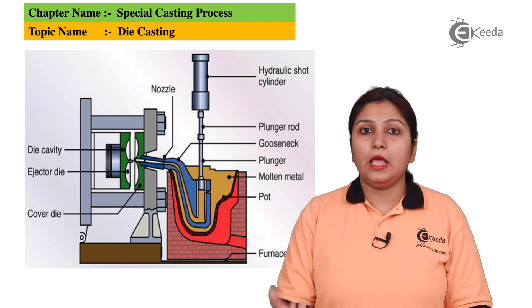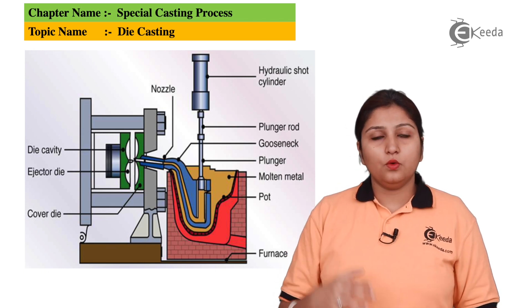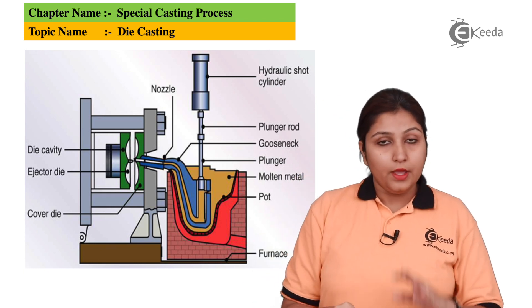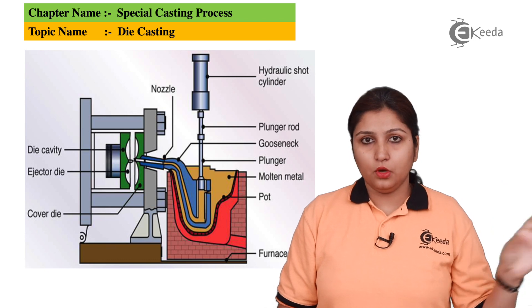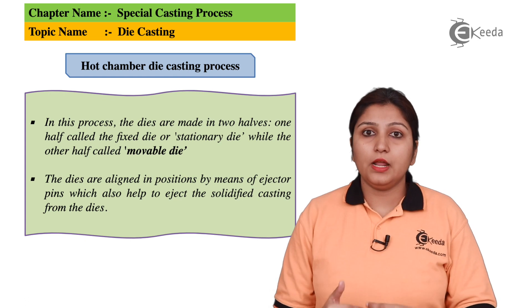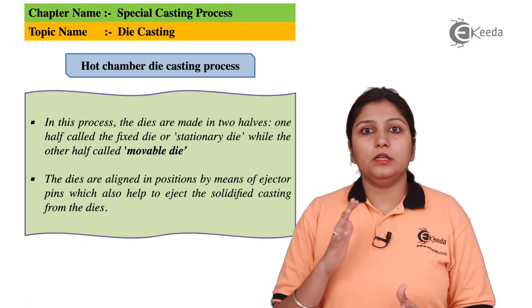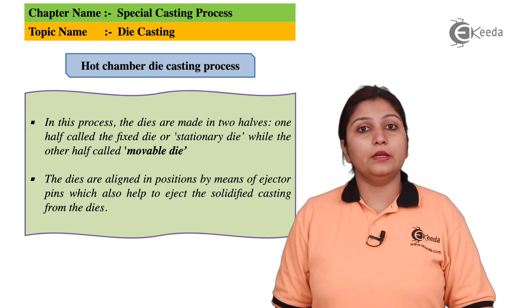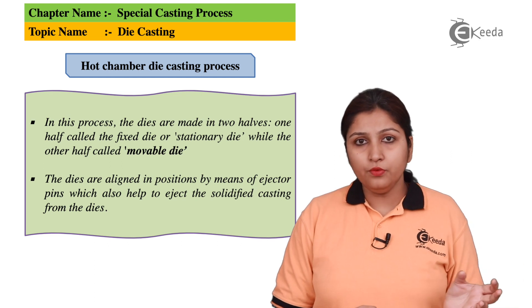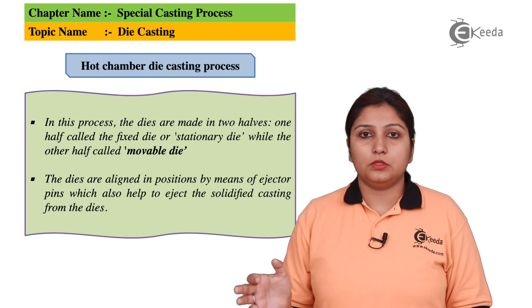As the name suggests, hot die casting requires the material to be hot — the molten material should be at a high temperature. A hydraulic pot cylinder acts as the plunger. It pushes the material down and it goes through the pipes to your die. Pressurized material is filled into your casting. The gooseneck arrangement helps the material to go slowly by providing some solidification time. The ejector die is then removed and your material can be taken out easily.